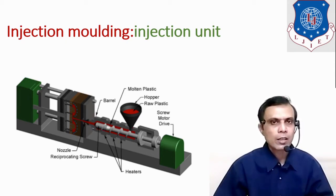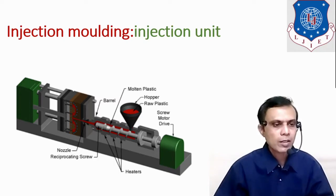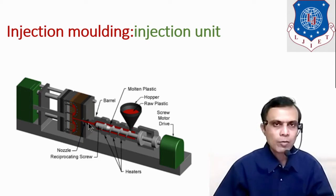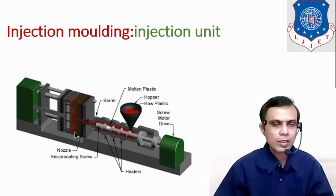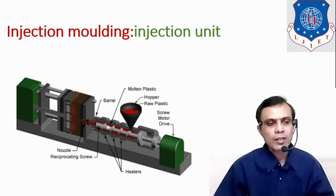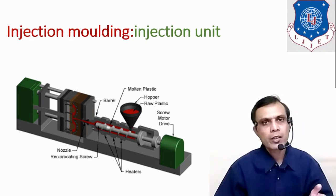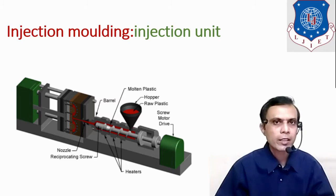The nozzle provides high kinetic energy or velocity to the molten plastic. By that energy, the molten plastic enters into the die cavity and every corner of the die cavity is filled with the molten plastic. After solidification, it is removed and we get the product.